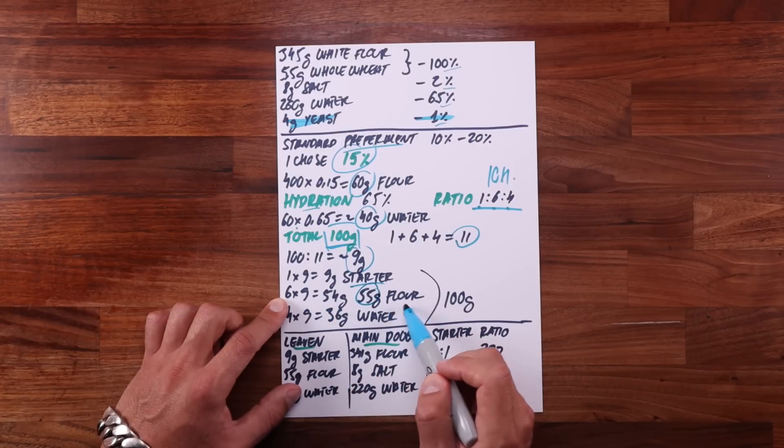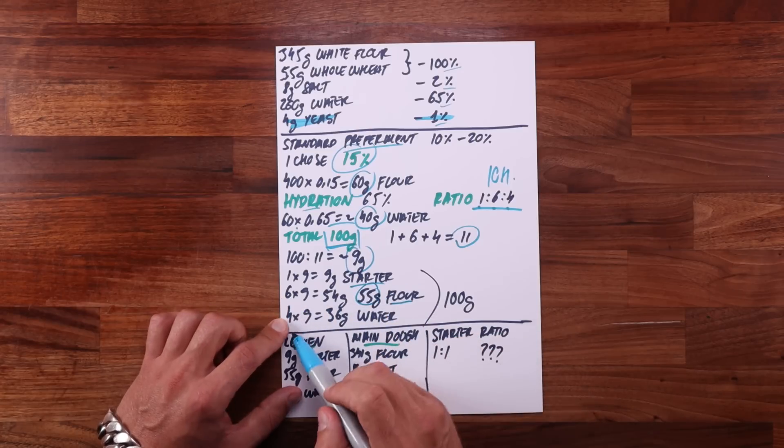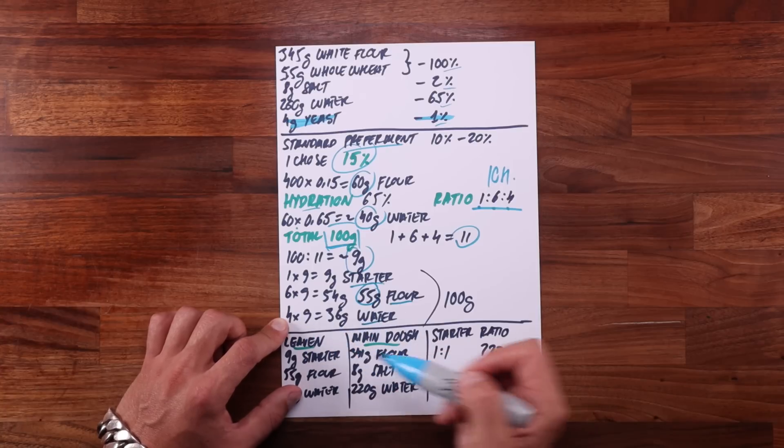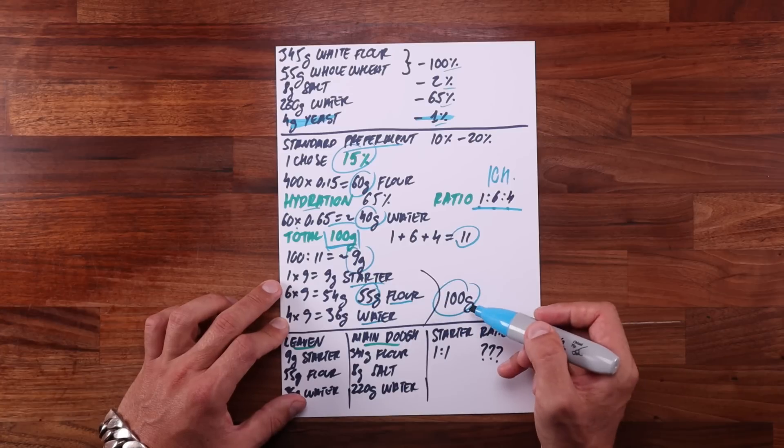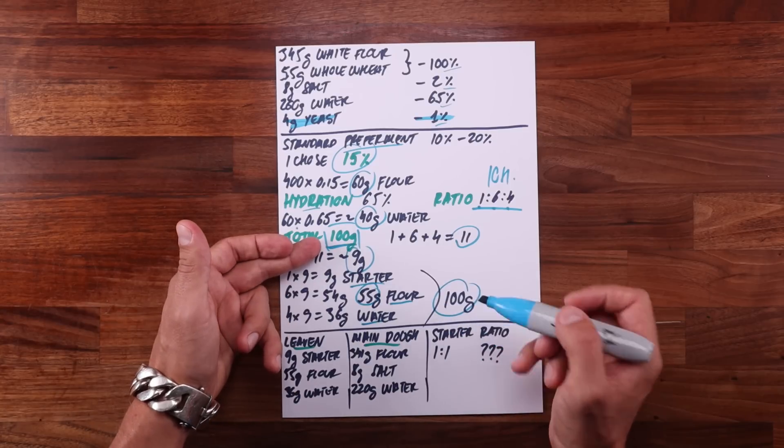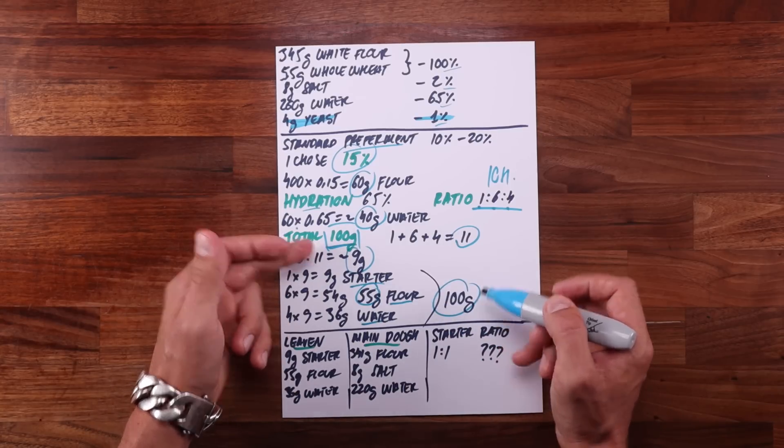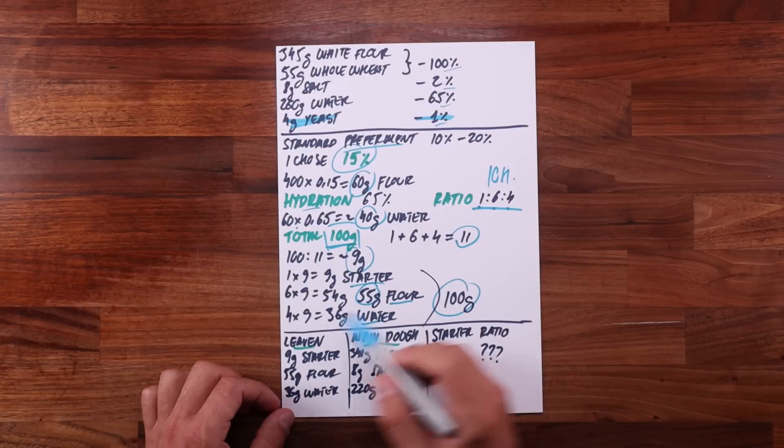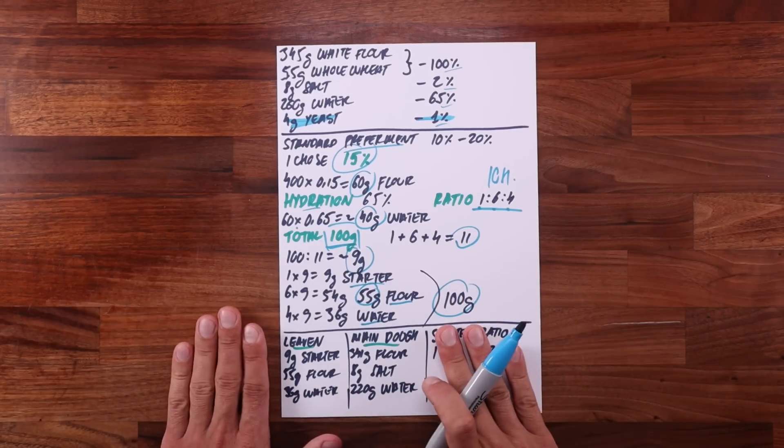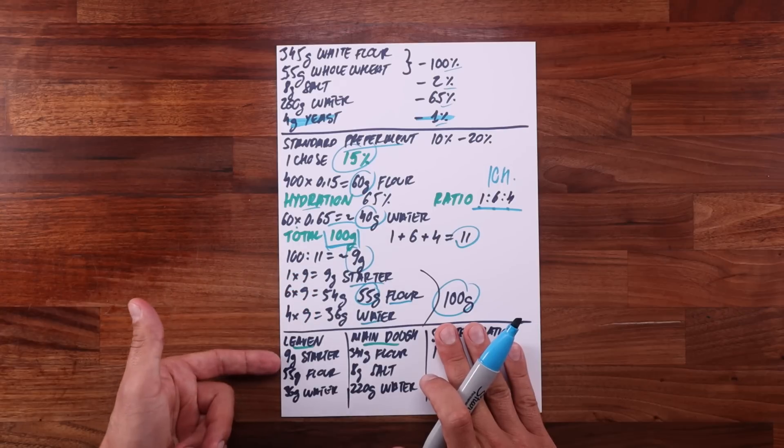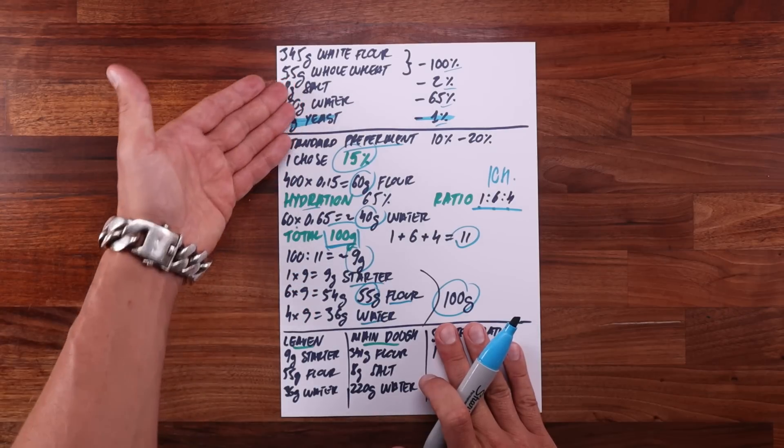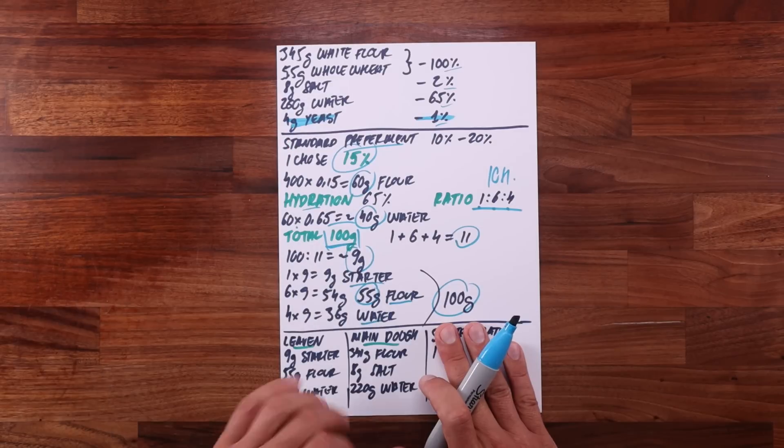So 1 part starter, 1 times 9 equals 9 grams of starter. 6 parts flour, 6 times 9 equals about 54. I rounded up to 55 so I can use all the whole wheat flour. And finally, 4 parts water, 4 by 9 equals 36. Adding up those numbers we get 100 grams. All you need to do now is subtract the amount of flour and water in leaven from the yeast dough formula. That's how we divide it into two parts: the preferment and the main dough.